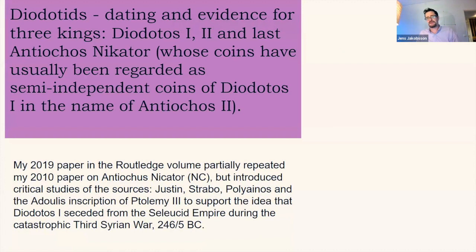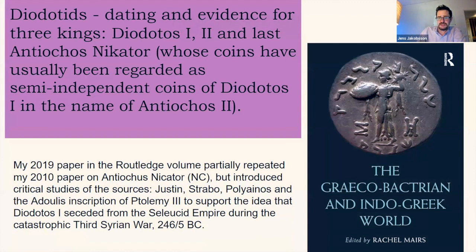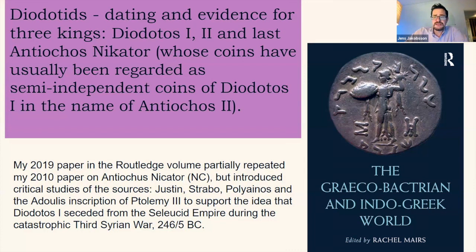I was given the honour of contributing to the Routledge volume in 2019, edited by Rachel Mars, which is the standard volume — though not a coin catalog. There I wrote about the independence of Bactria and tried to date it. I repeated my numismatical arguments from 2010, published in the Numismatic Chronicle, and added analysis of the sources, finding it fully possible to say that Diodotus I seceded from the Seleucids in 246 BC, when there was a catastrophic war between the Seleucids and the Ptolemies and the Seleucid empire was almost annihilated.